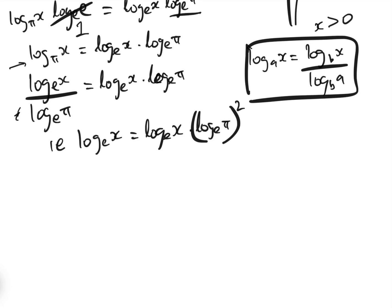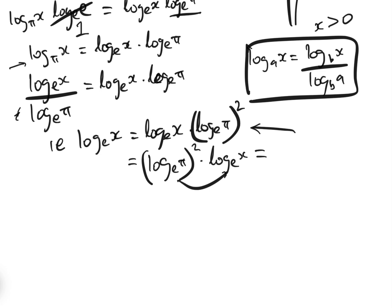Now we can actually solve this by inspection, but let's keep going. Let's rewrite the right-hand side as log_e(pi squared) times log_e(x), which also equals — moving this up to the exponent —